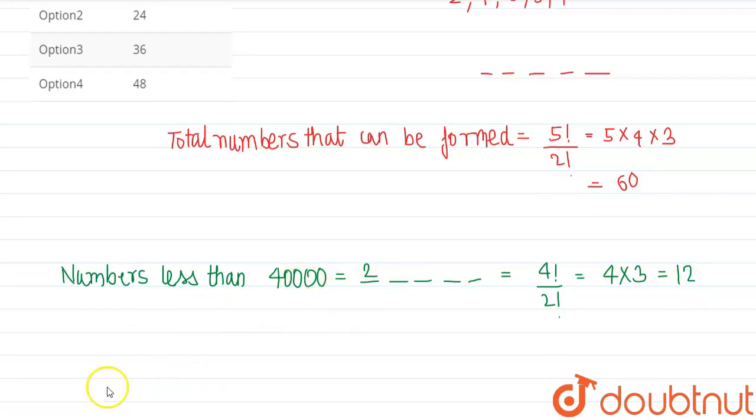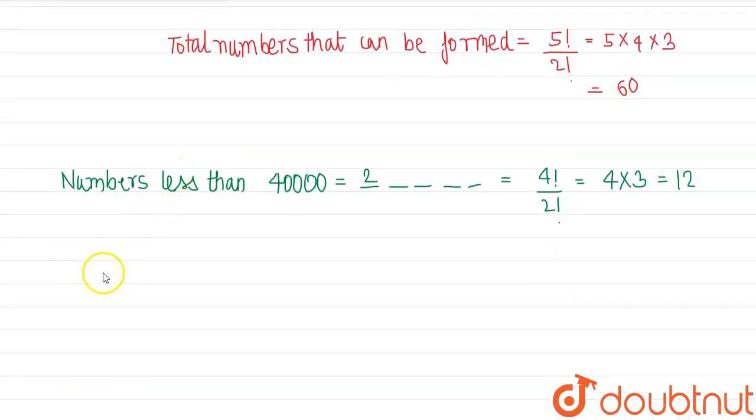So the numbers that are greater than 40,000 equals 60 minus 12.